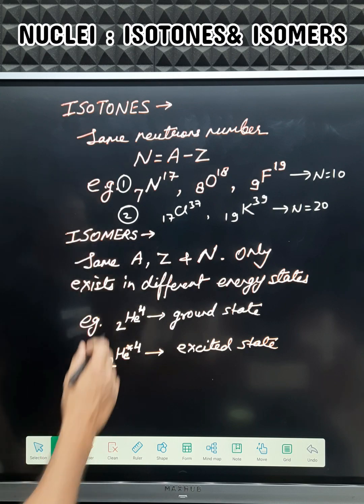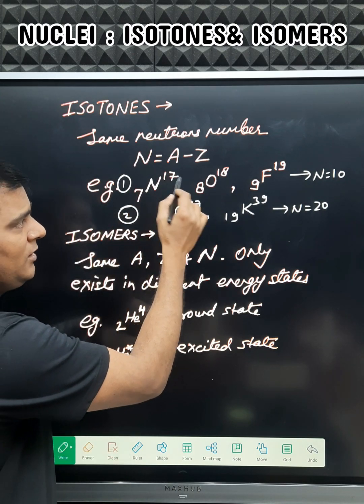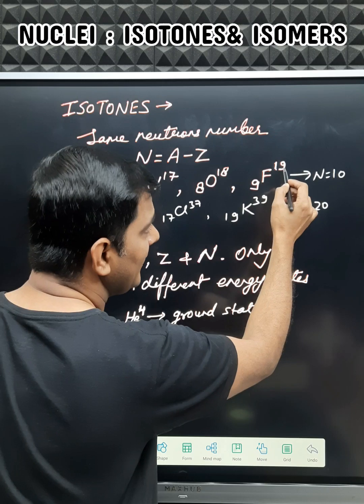So if we give an example, then 7 nitrogen 17, 8 oxygen 18, 9 fluorine 19.